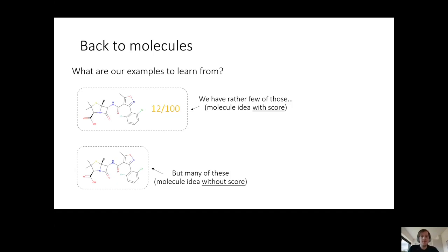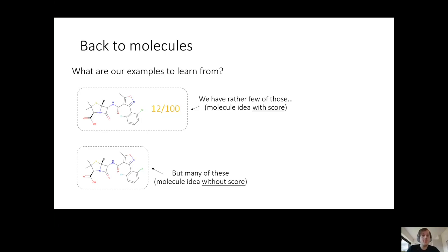Instead, we can do something different. We can forget about our initial goal for a bit — forget that we want to create painkillers — and we can take just any molecules. Not molecules with scores, but just any molecules. People have tried, made, and tested many, many molecules in the past for different reasons — sometimes looking for a cure for a disease, or for other reasons. People have looked at many, many molecules and usually would write things down. If you're looking for just a list of sensible molecules that kind of make sense as potential medicine, this list is very easy to find — you can find millions of molecules that people have looked at.